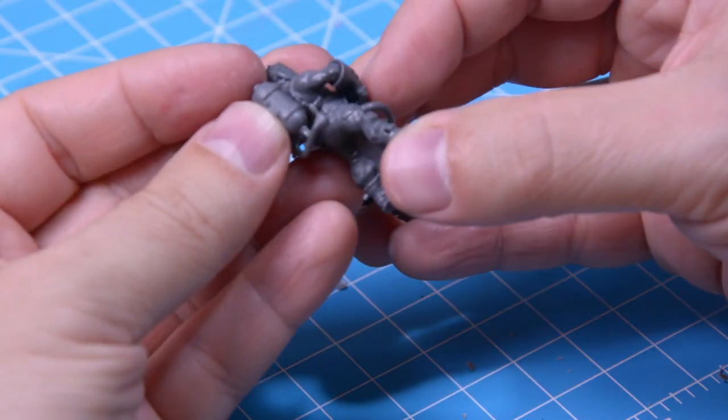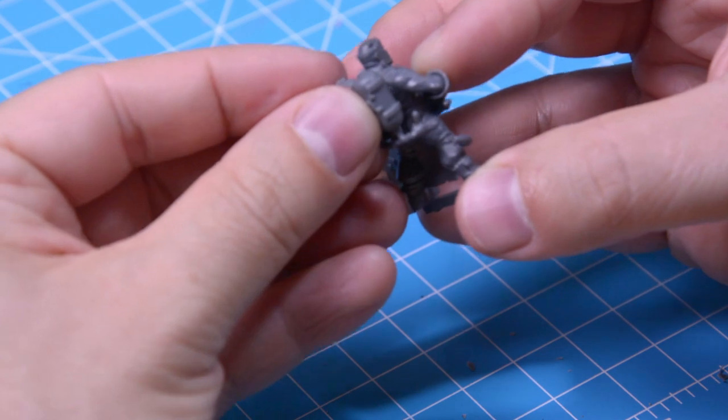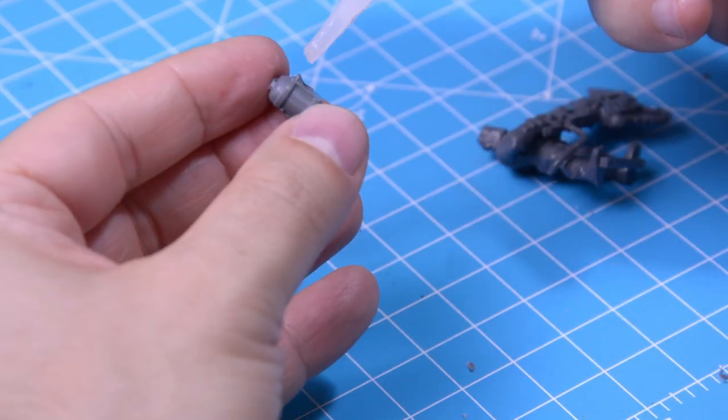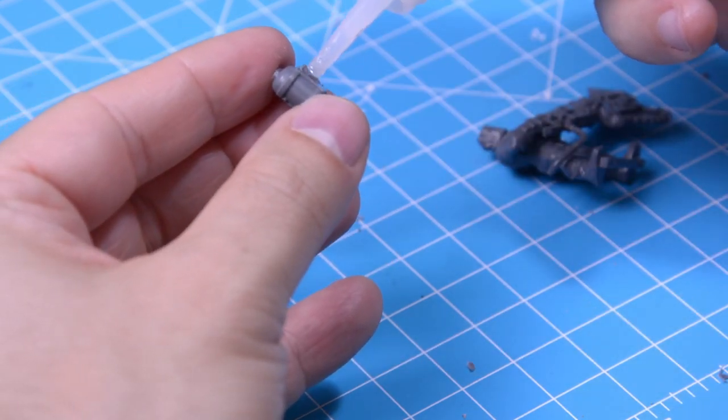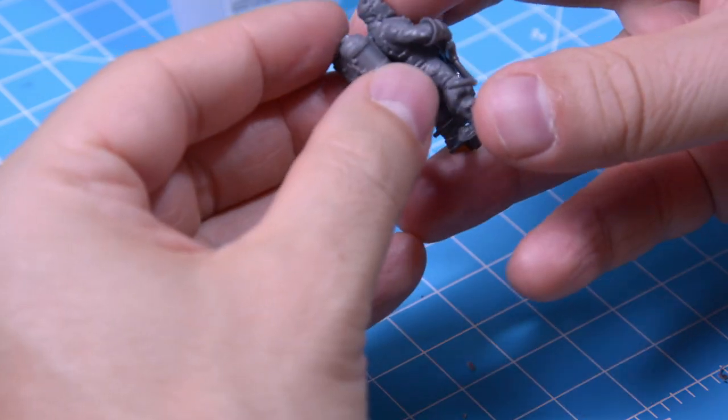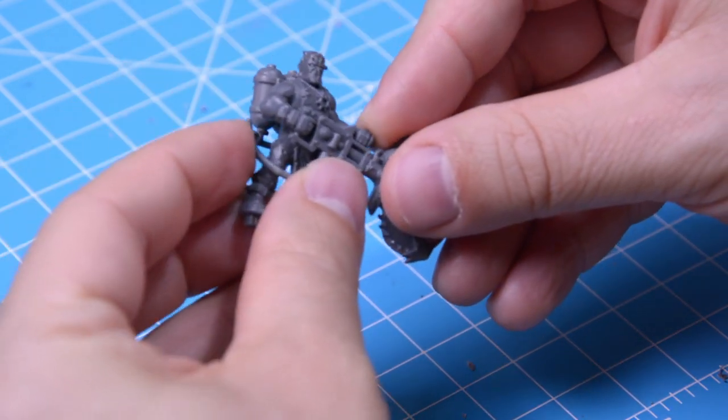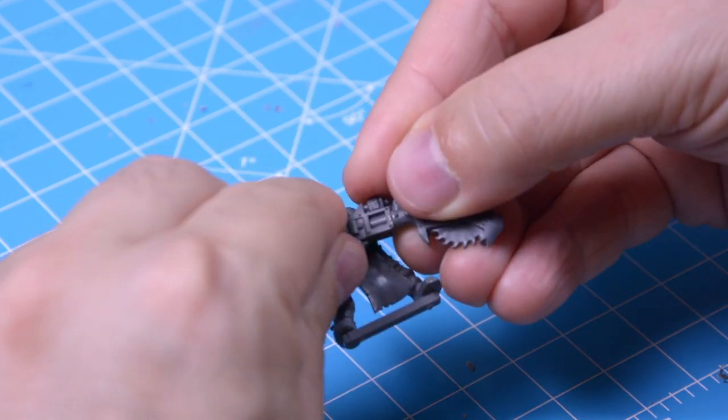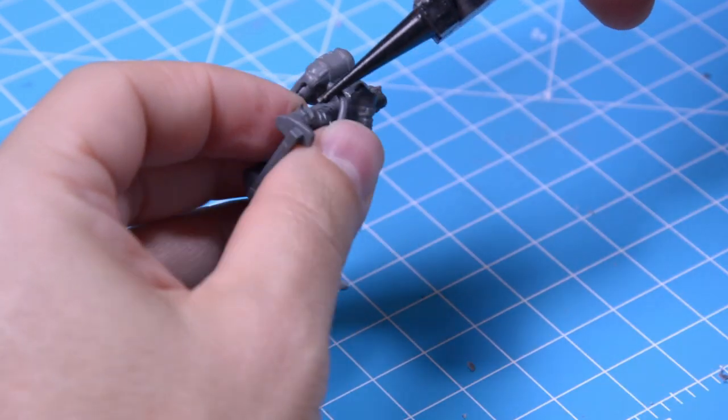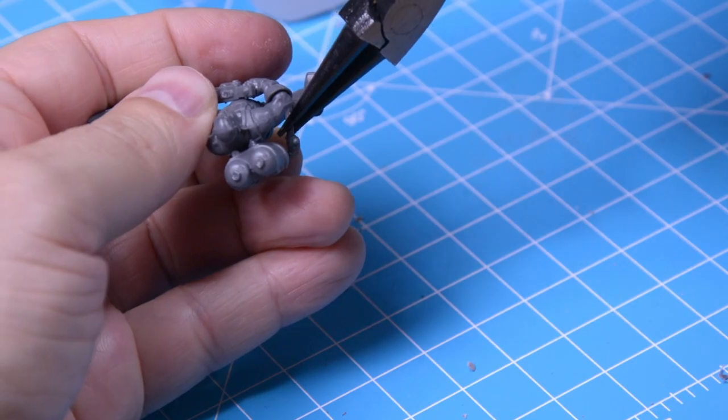The flamethrower came with a backpack, but apparently I already used that for another conversion at some point, so I'll just postpone that problem and grab some gas tanks from an Imperial Guard kit. Of course the hose doesn't line up with this backpack, so I'll try to carefully bend it and hope it won't snap. Success!